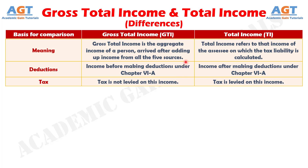With the above discussion, one thing must be clear to you that tax is always applicable on the total income of the assessee, calculated with a step-by-step process wherein first of all gross total income is determined, and after which deductions are made to reach the total income figure. So these are the differences between gross total income and total income. If this lecture was helpful, give it a thumbs up and subscribe to the channel. Thank you.